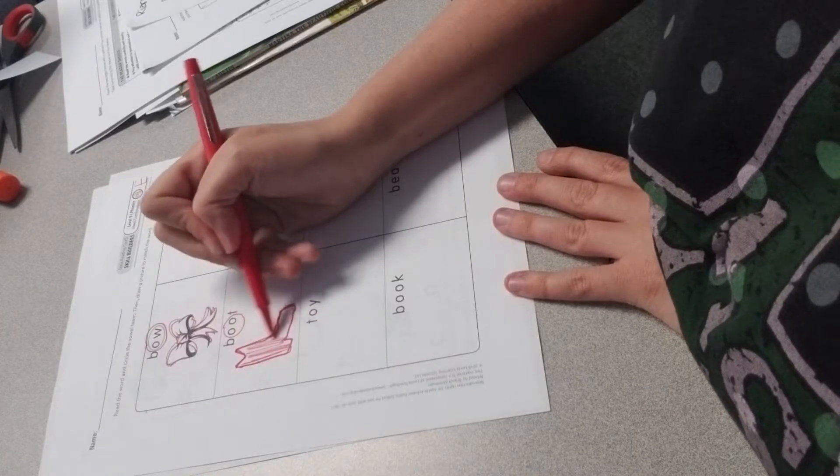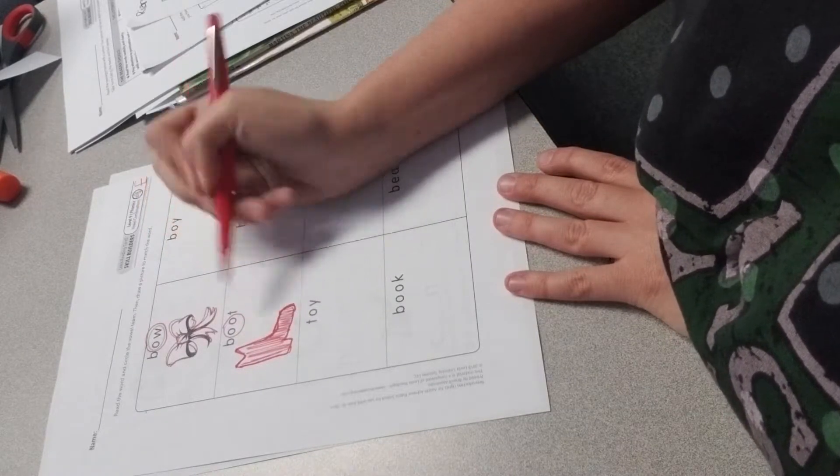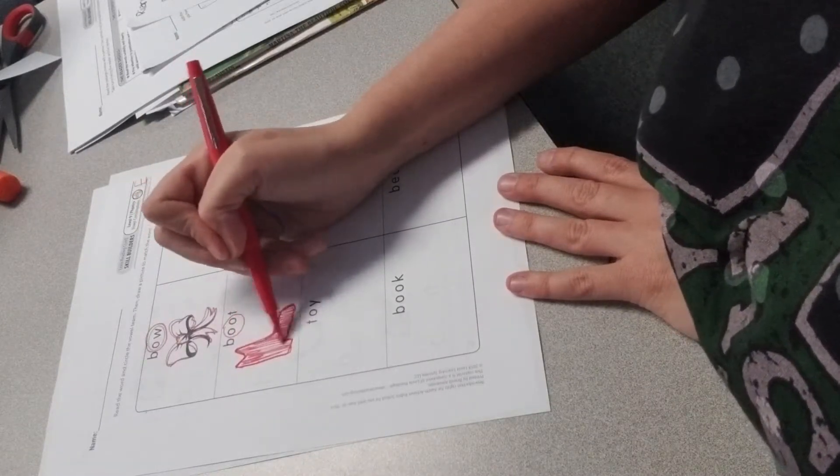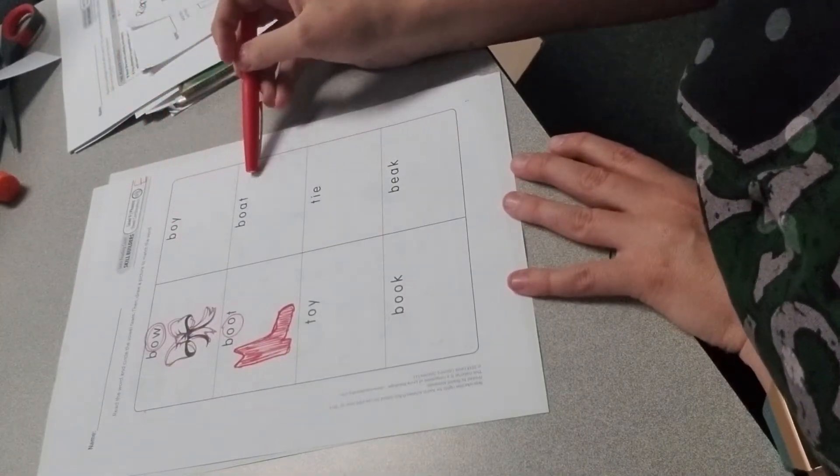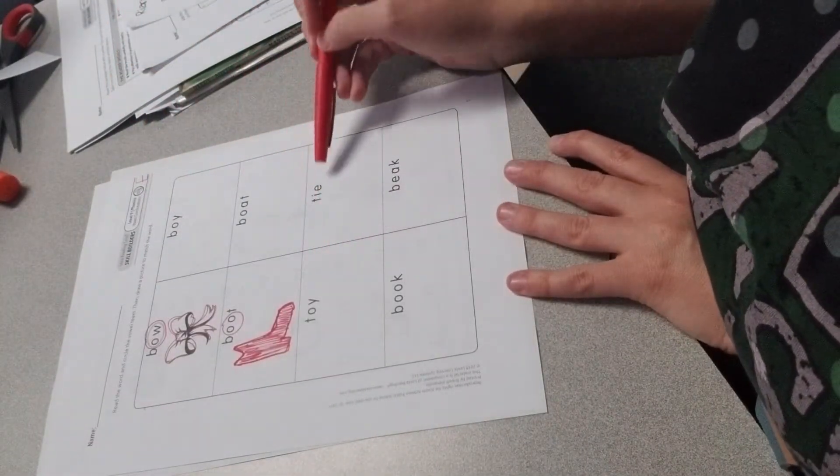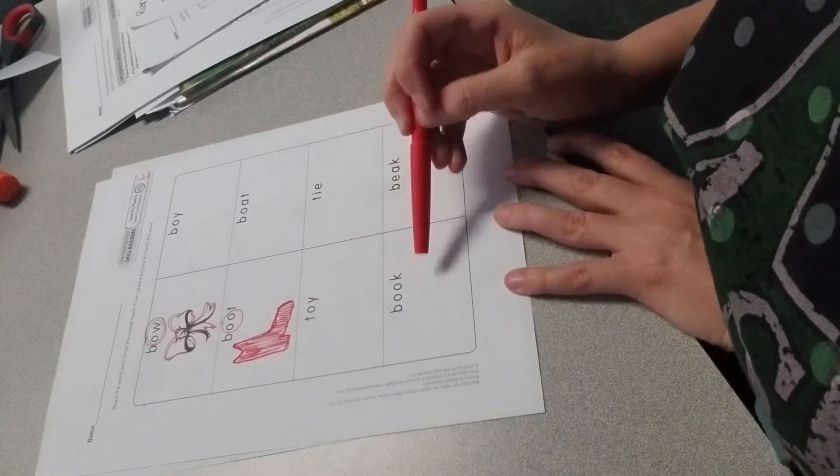Hopefully yours looks a little bit more like a boot than mine. But anyway, go ahead and finish this for the rest of these. We have boy, boat, toy, tie, book, and beak. All right.